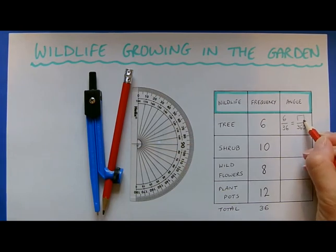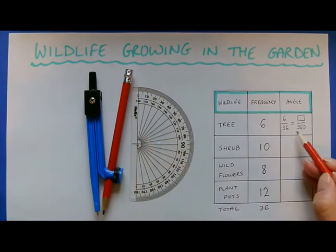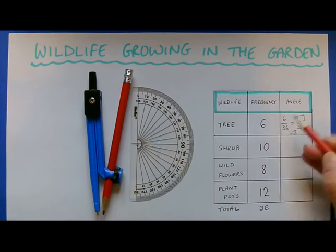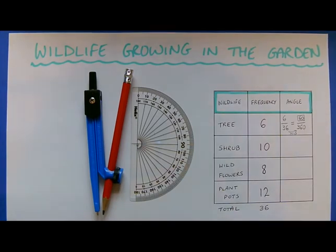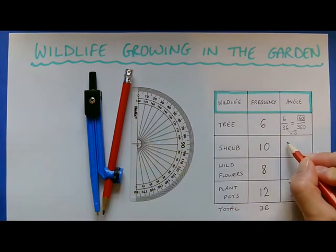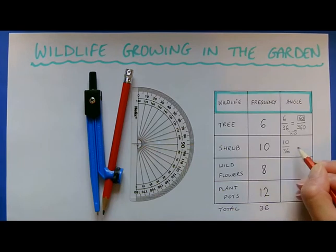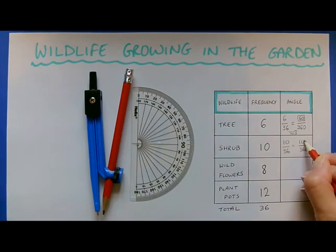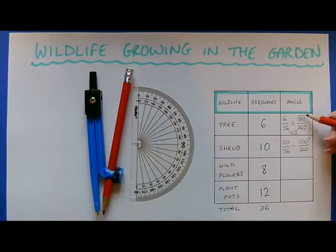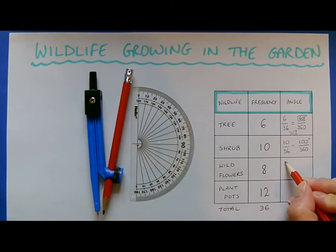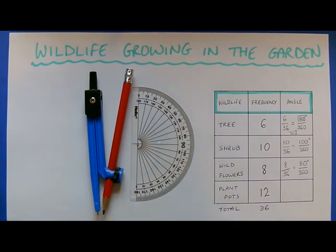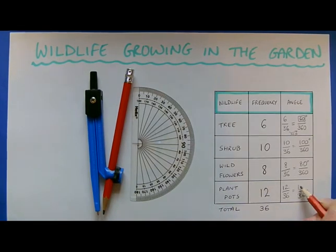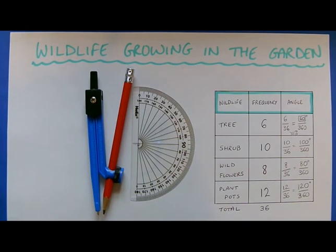I can make an equivalent fraction over 360, and the numerator will be the angle I draw. Multiplying by 10 gives a 60-degree angle for trees. For 10 out of 36, an equivalent fraction over 360 gives 100 degrees for shrubs. 8 out of 36, times top and bottom by 10, gives 80 degrees for wildflowers. And 12 out of 36 gives 120 degrees for plant pots. They should add up to 360 degrees — 60 plus 100 plus 80 plus 120 — and they do.